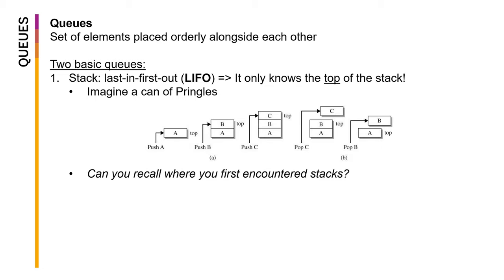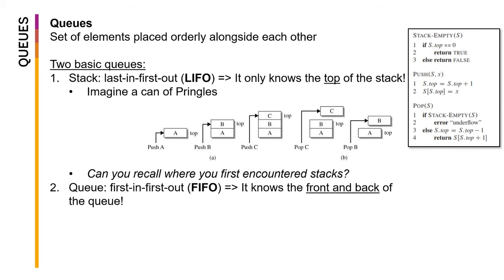The second type is generally called a queue, which implements a first-in first-out policy — a first-come first-served basis. In the order queue example, whichever order comes in first will be pulled out first to be cooked by the chef. Unlike stacks that only know the top, queues know two things: which element is at the front and which is at the back. You can imagine a line of people or cars.